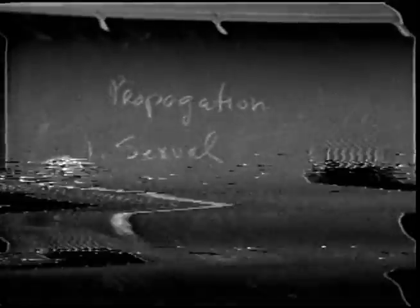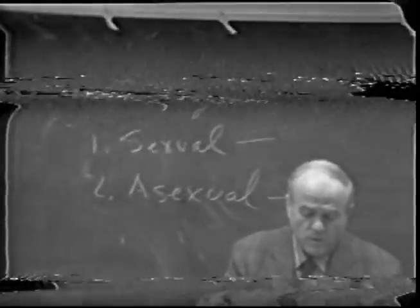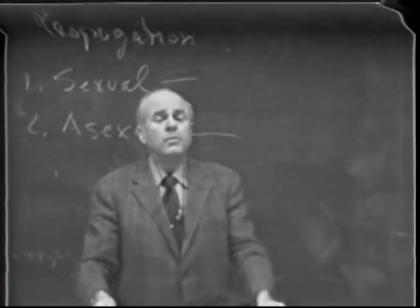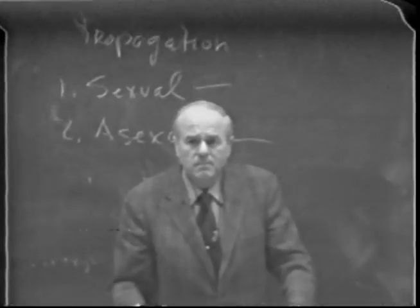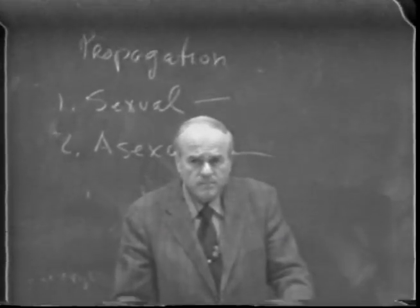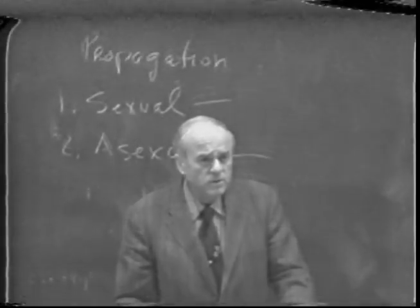We have two types: sexual and asexual. In the lab you're getting the asexual part. I'm going to tell you a little about the sexual part this morning, which is done primarily by breeding, by the use of seeds. Ordinarily we do not plant seeds like lettuce seeds, radish seeds, or tomato seeds to propagate grapevines, because seeds do not breed true to character. So if you want something to breed true, you have to use asexual propagation, which you are getting in the lab.